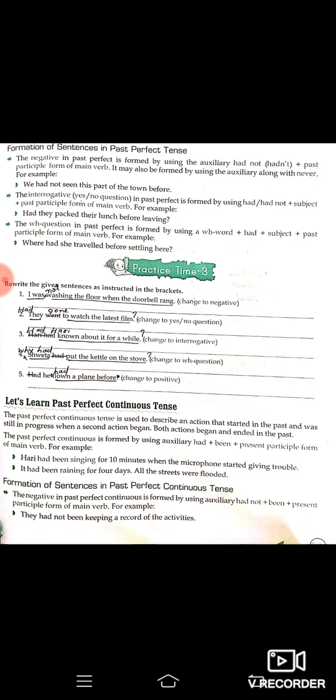Formation of sentences in past perfect tense. The negative is formed by using 'had not'. Example: 'We had not seen this part of the town before.' The interrogative uses 'had' at the beginning: 'Had they packed the lunch before leaving?' The WH question uses WH word plus 'had' plus subject plus past participle: 'Where had she traveled before settling here?'